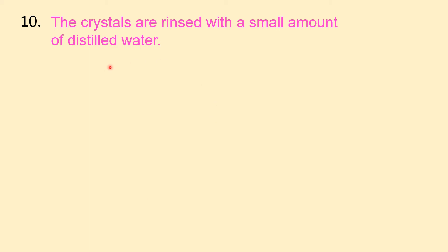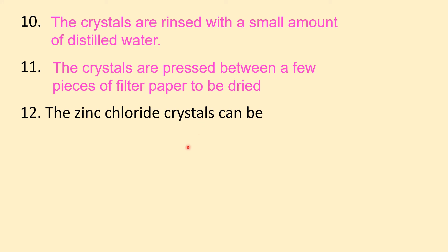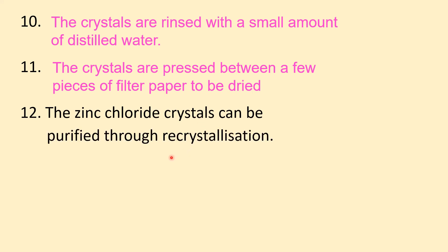The crystals are rinsed with a small amount of distilled water, then pressed between a few pieces of filter paper to be dried. The zinc chloride crystal can be purified through recrystallization. The chemical equation: zinc reacts with hydrochloric acid to produce zinc chloride (a soluble salt) and hydrogen gas. Zinc chloride is a white-colored salt.